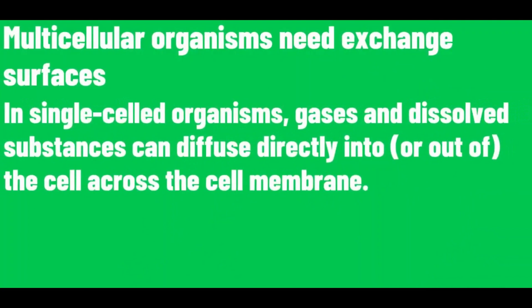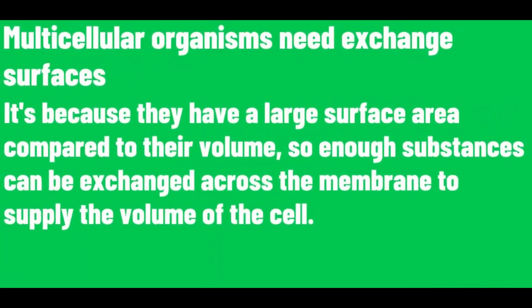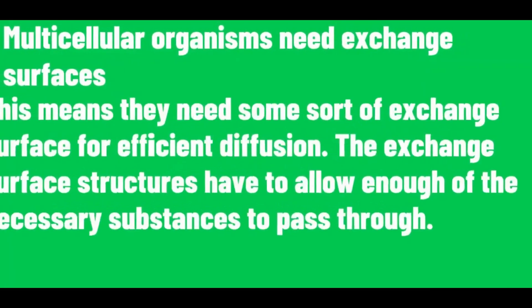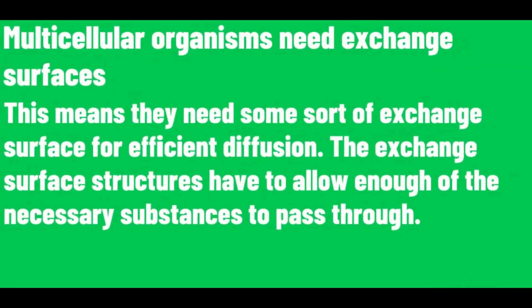Multicellular organisms need exchange surfaces. In single-celled organisms, gases and dissolved substances can diffuse directly into the cell across the cell membrane, because they have a large surface area compared to their volume, so enough substances can be exchanged across the membrane to supply the volume of the cell. Most multicellular organisms have a smaller surface area compared to their volume, so not enough substances can diffuse from the outside surface to supply the entire volume. This means they need some sort of exchange surface for efficient diffusion.